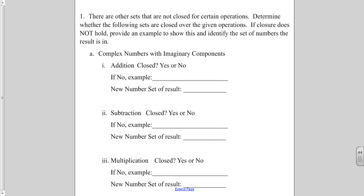What we're supposed to do on this worksheet is to determine whether the following sets are closed over the given operations. If closure does not hold, we have to provide an example to show this and identify the set of numbers the result is in. So, we're starting out for this a, the complex numbers with imaginary components. That means we have a number in the form a plus bi, where a and b are both not equal to zero. So, we have to have a complex number with imaginary components.